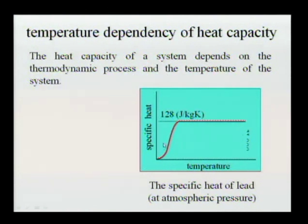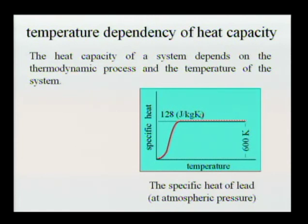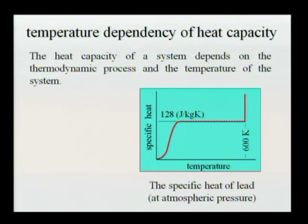When we continue increasing the temperature of lead, we reach a wide range of temperatures in which the specific heat of lead is approximately constant. Room temperature is probably somewhere in that range. At about 600 Kelvin, lead begins to melt. When a substance melts, specific heat jumps to infinity.